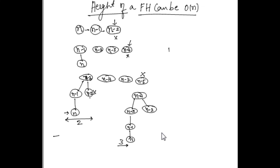What we did is call a decrease-key function, then added 2 numbers, and then called delete-min again. So in each iteration, we call 1 decrease-key, 2 add operations, and 1 delete-min. When you keep doing this, in every iteration the height of the tree increases by 1. So if you repeat this order n number of times, you will be left with a Fibonacci heap of height order n.